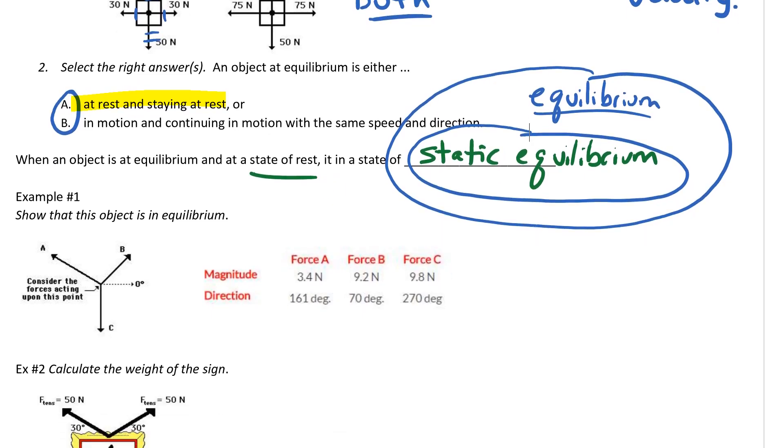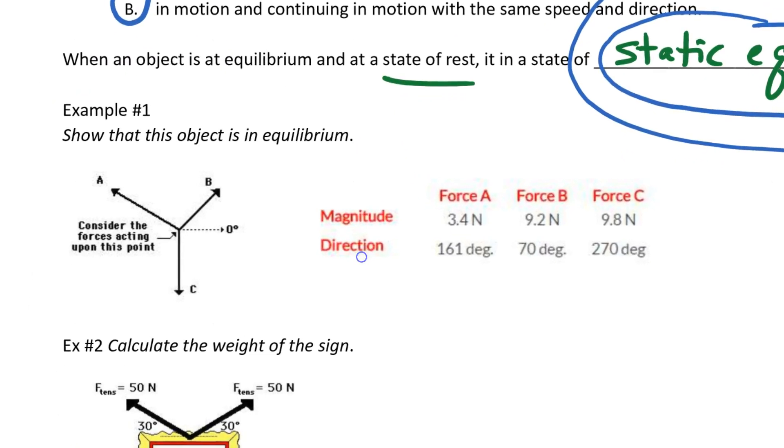Moving on to our examples here. Example one says show that this object is in equilibrium, and we've got a bunch of numbers here to show the magnitude and the direction. Notice how the direction, starting from the x-axis, the positive x-axis, we rotate from that one. You'll notice that B is about 70 degrees, A is all the way over to 161 degrees.